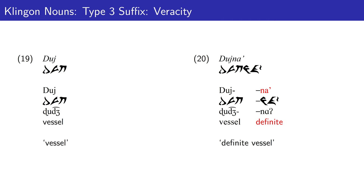Alternatively, if the speaker is quite certain of the information, the type 3 suffix 'law'' may be used instead, marking that the speaker is certain of the information.